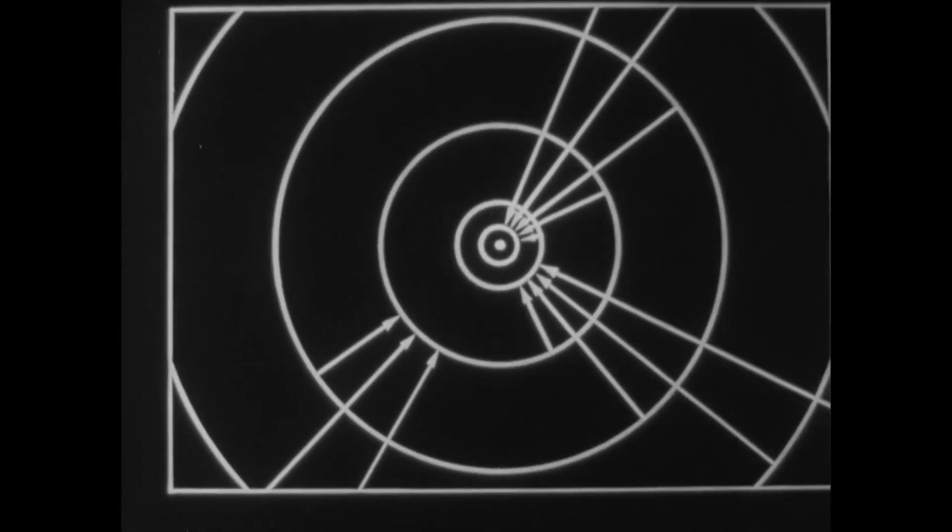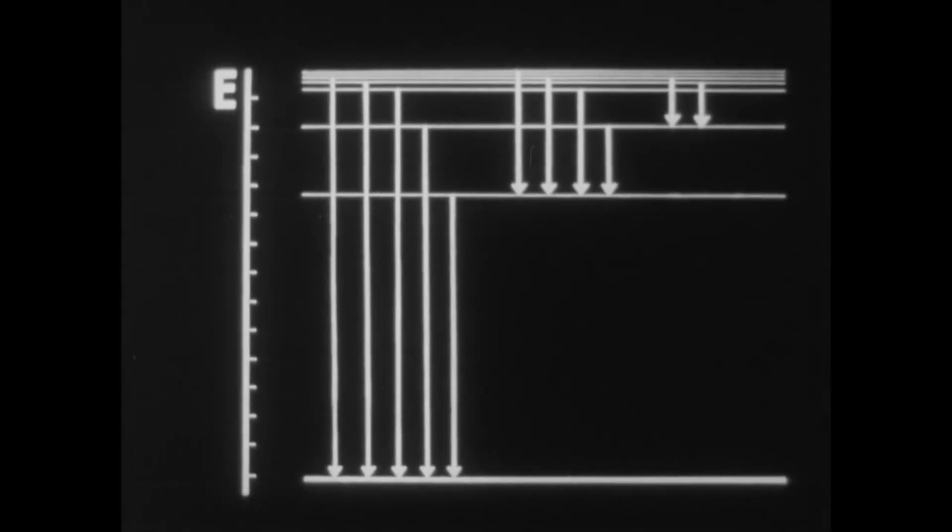Stationary energetic states are depicted as energy levels, and transitions are represented by arrows connecting corresponding levels.